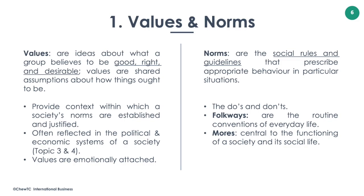Both the words values and norms are defined in culture. By values, we mean ideas about what a group of people believes to be good, right, and desirable. Put differently, values are shared assumptions about how things ought to be. By norms, we mean the social rules and guidelines that prescribe appropriate behaviour in particular situations. Values form the bedrock of a culture. Values provide the context within which a society's norms are established and justified. They may include a society's attitudes towards concepts such as individual freedom, truth, justice, honesty, loyalty, social obligation, collective responsibility, women, love, sex, marriage, and so on.